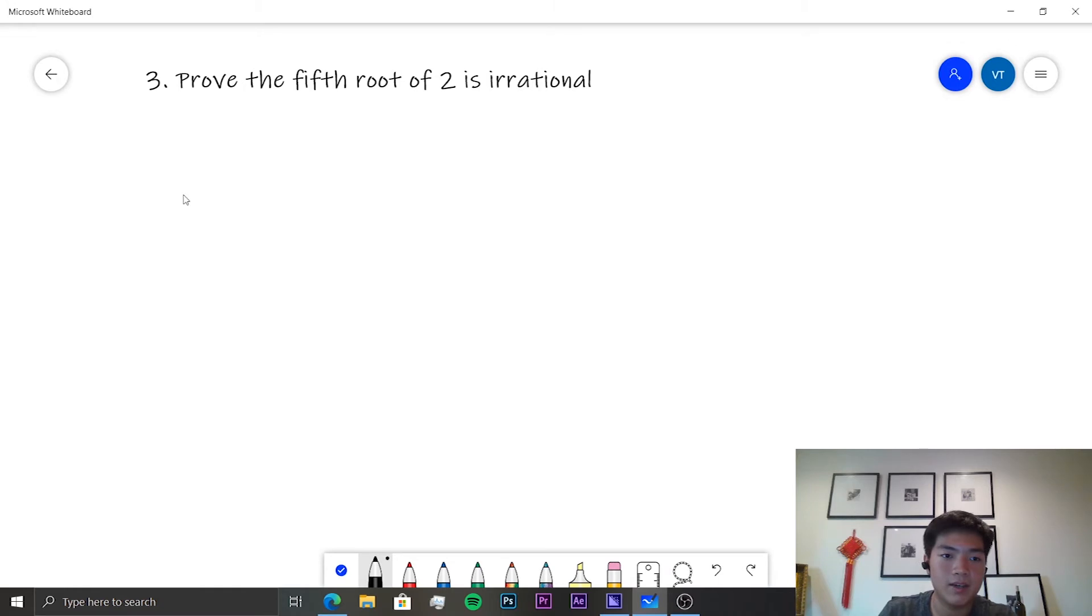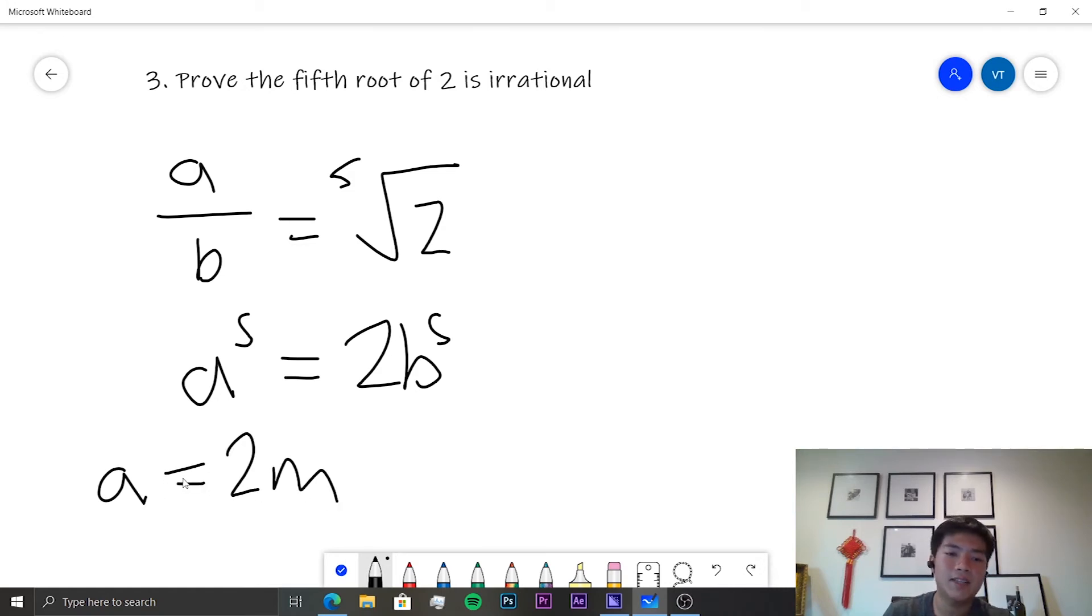So in this case, let's say a over b is equal to the fifth root of 2. Let's assume that the fifth root of 2 is rational for this moment. So that means a to the 5 is equal to 2 times b to the 5. And it therefore follows that a must be an even number, say 2m. a must be an even number, of course, because it is equal to 2 times another number, and that's always even.